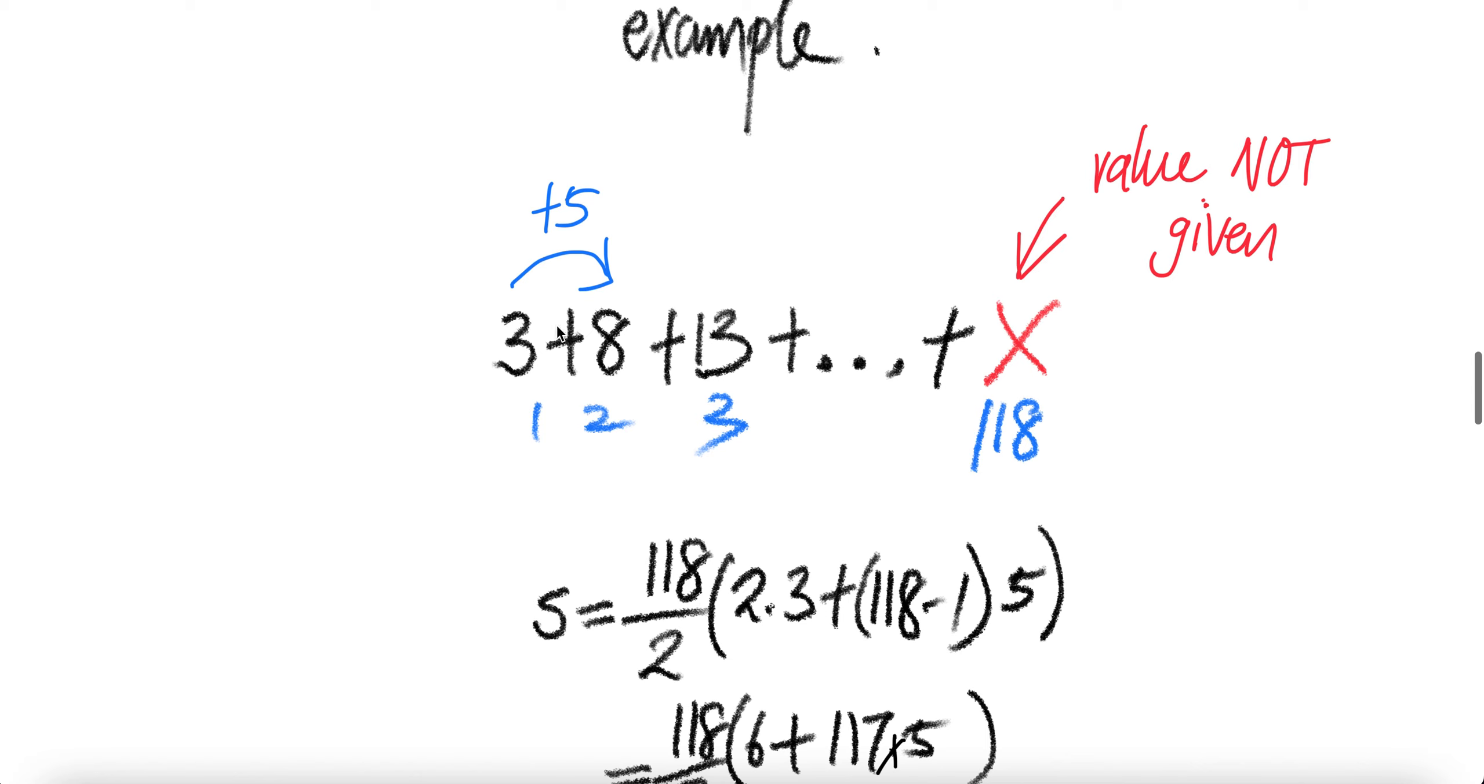Now let us look at the example. We are given three, eight, 13, blah, blah, blah to 118 terms. And then the common difference is five. Three plus five is eight plus five is 13, and so on to 118. This is not given. So value is not given. The value of that 118th term is not given.